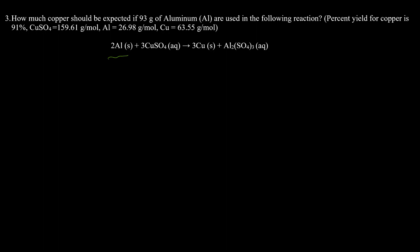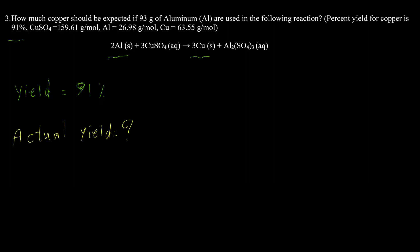In example 3, the question asks how much copper should be expected if 93 grams of aluminum are used in the reaction. Aluminum is the reactant and copper is the product. The yield of the reaction for copper is 91%. When the question says 'expected,' it means we want to calculate the actual yield. We have 93 grams of aluminum, and we can use that to calculate the theoretical yield for copper.